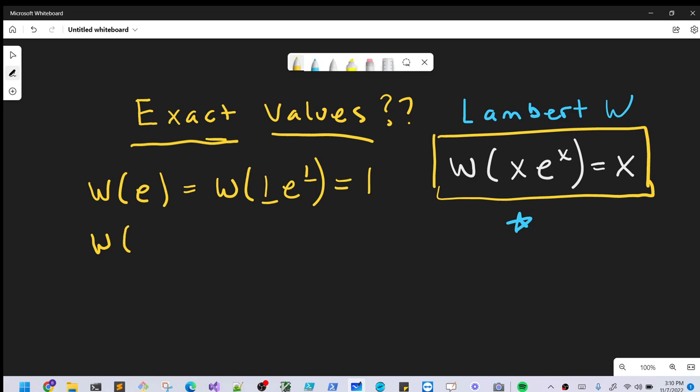We could look at Lambert W of 0. This can be expressed as 0 times e to the 0, and then again, same input-output, so that's going to be a value of 0.